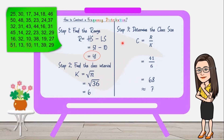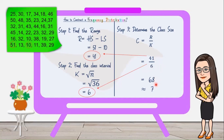Step 3: Determine the class size. To determine the class size, use the formula C equals R over K. C is the class size, R is the range, and K is the class interval. From step 1, the range is 41, and from step 2, the class interval is 6. Dividing 41 by 6, we get 6.8. We need to round this off to the nearest whole number. Remember: round up if the next digit is 5 or greater, round down if it is 4 or lesser. In this case, we round up to get 7.